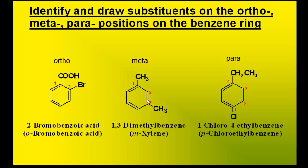When two groups are one carbon away from each other, it's called meta. And when two groups are two carbons away from each other, they're called para to one another.